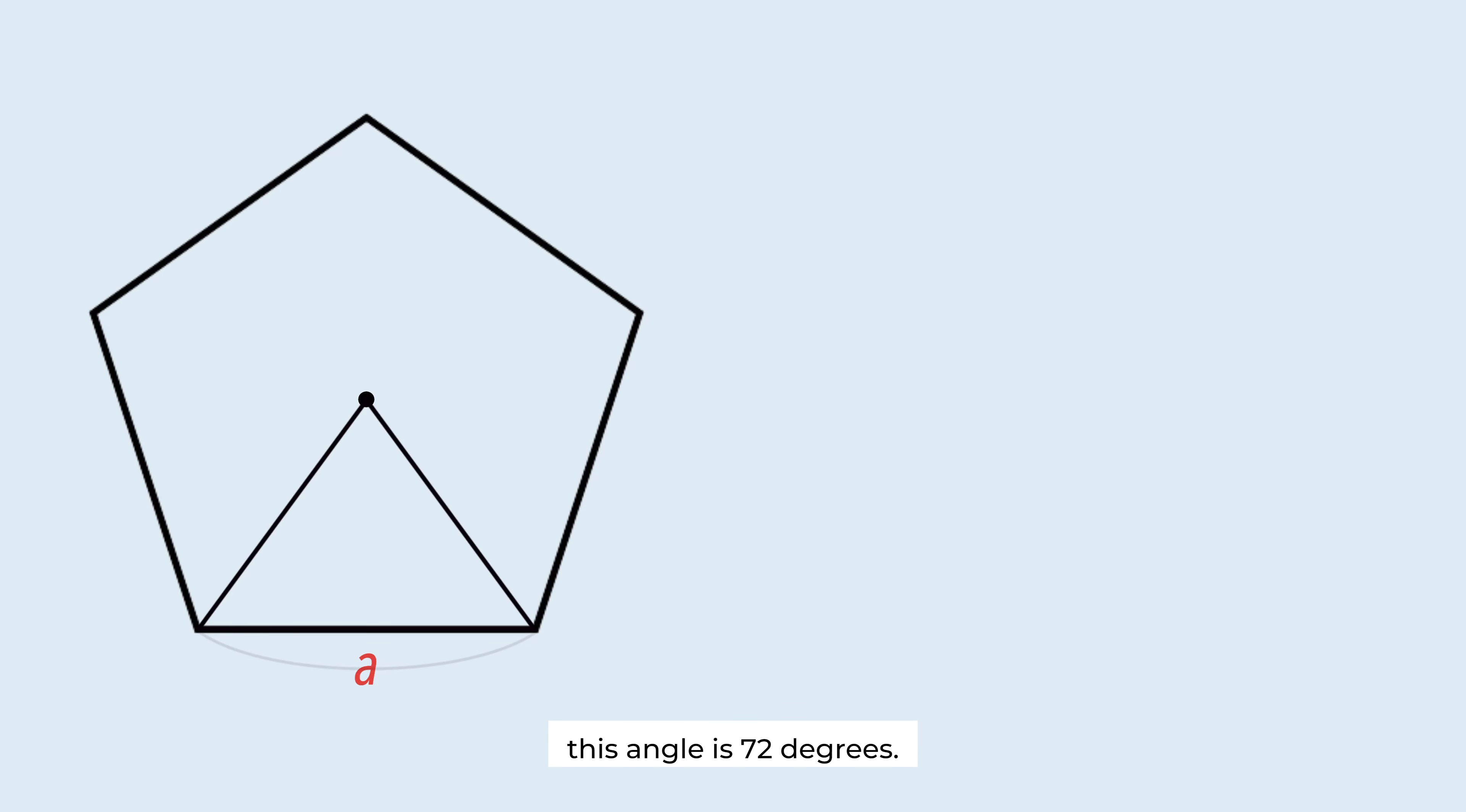In a regular pentagon, this angle is 72 degrees, so this angle is 36 degrees. For this triangle, tangent 36 degrees equals this. The apothem is calculated this way.